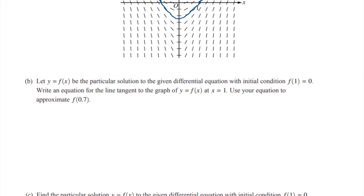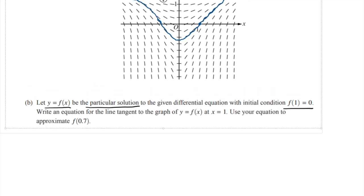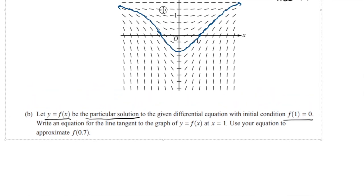Part B says let y equals f(x) be the particular solution to the given differential equation with initial condition f(1) equals 0. In other words, it goes through that point (1,0)—it must be this blue curve here that we're looking at. So this y equals f(x) is actually our blue curve drawn there. And they want us to write an equation for the line tangent to the graph of f at x equals 1, and use our equation to approximate f(0.7).